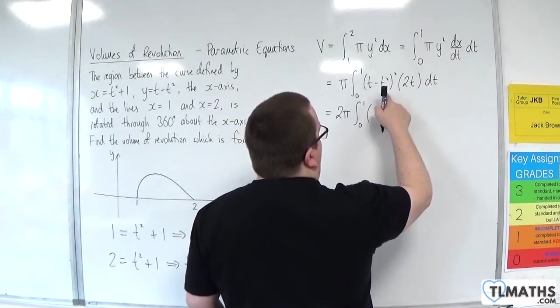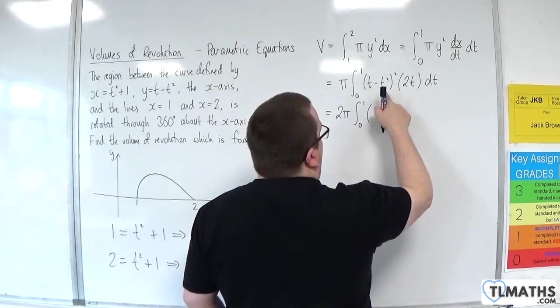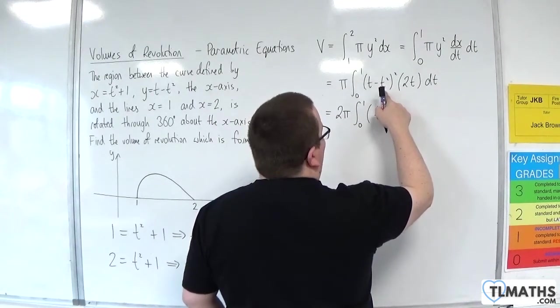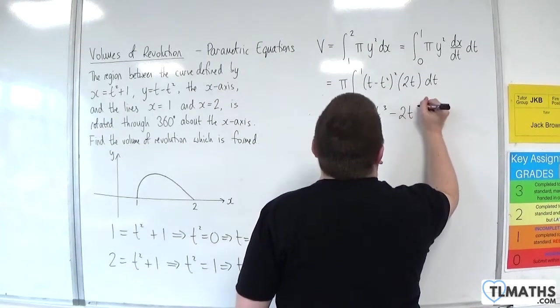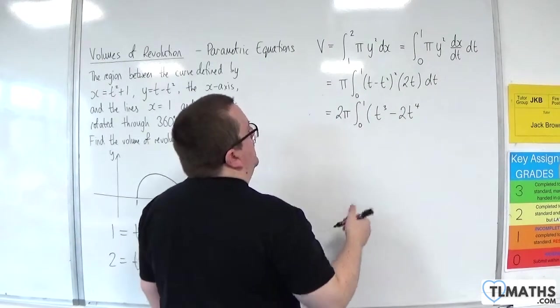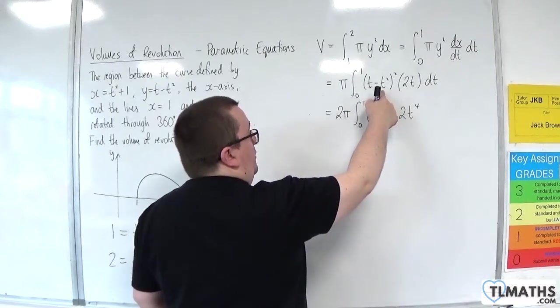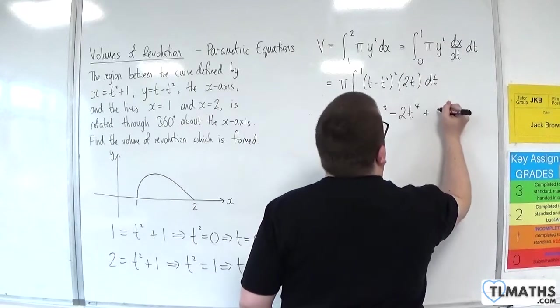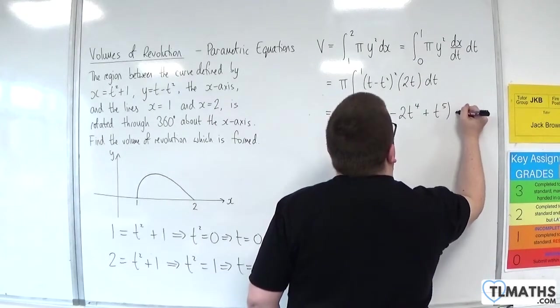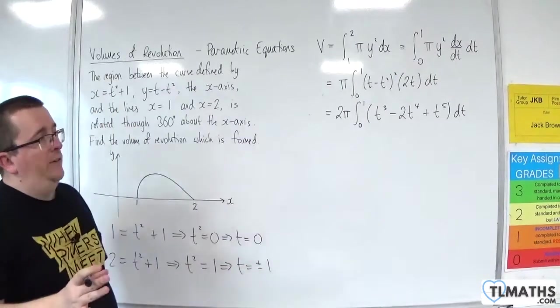We'll have t times minus t squared twice. So that would be minus 2t cubed, times by the t. So minus 2t to the 4. Then I'm going to have minus t squared times minus t squared, which is t to the 4, times by t. So plus t to the 5 dt. So that's expanding the brackets out.